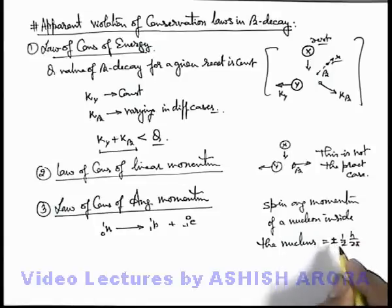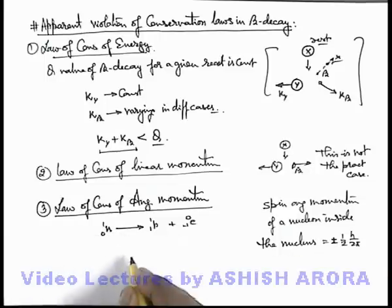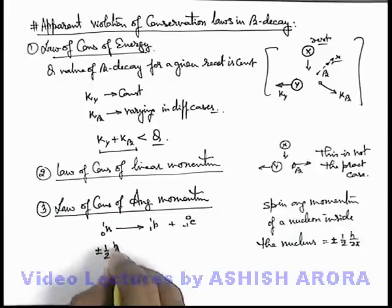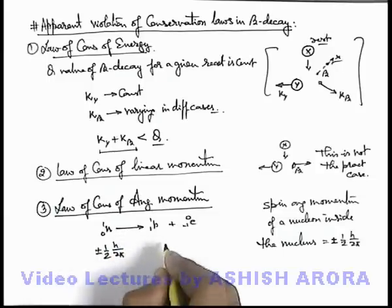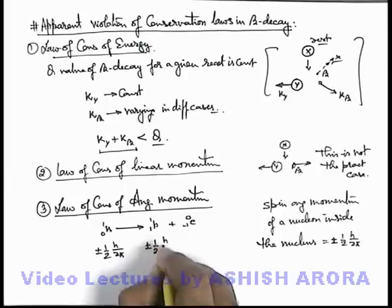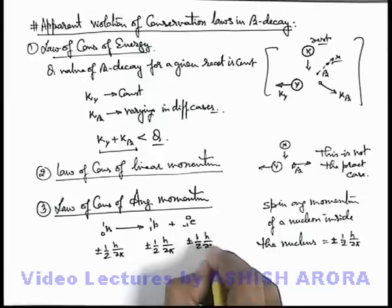Plus minus corresponds to either clockwise or anticlockwise spin direction, so its magnitude is half h over 2 pi. So if a neutron decays to a proton and an electron, here we can see the neutron would be having spin angular momentum plus minus half h over 2 pi. And if it transforms to a proton and an electron, which is also a nucleon in this case, these two must also carry plus minus half h over 2 pi and plus minus half h over 2 pi spin angular momentum.